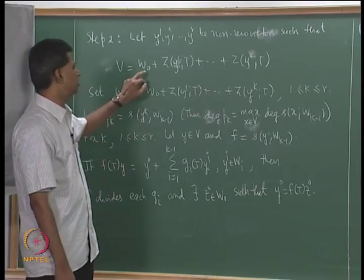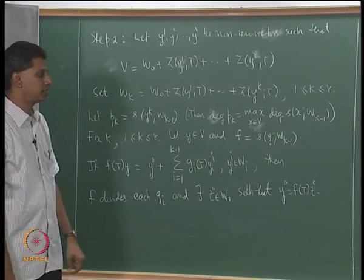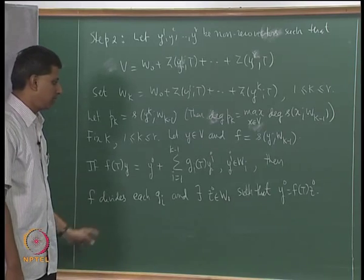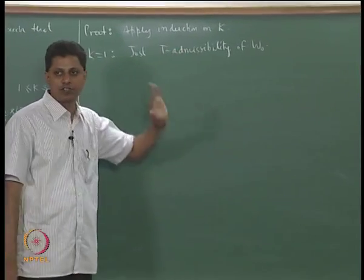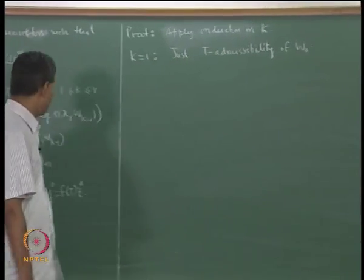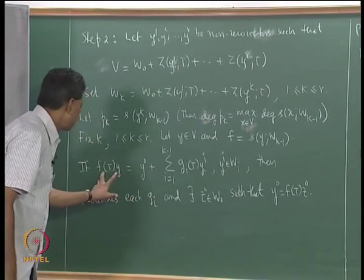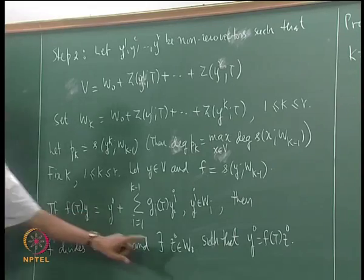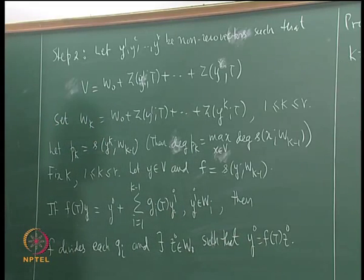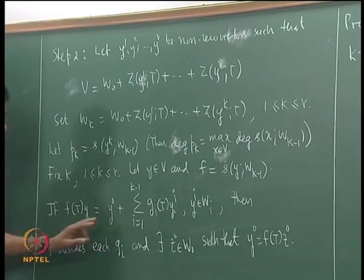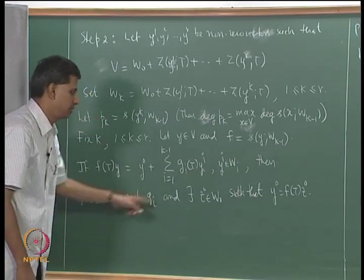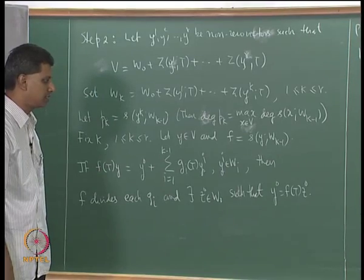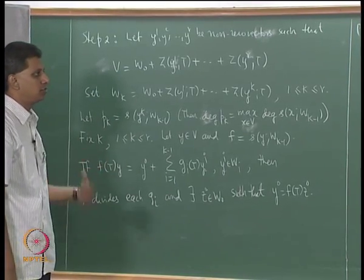W_0 is a t-admissible subspace of V. The proof is by induction on k. For k equal to 1, this is just t-admissibility of W_0. For k equal to 1, f(t)y is y_0, then y_0 is f(t)z_0. For k equal to 1, I need to verify only this part because there are no polynomials g_i present, so k equal to 1 is just t-admissibility of the subspace W_0.